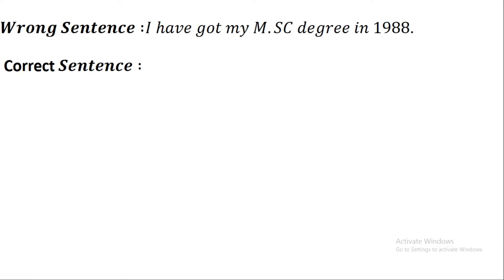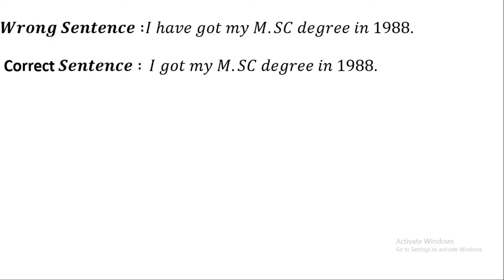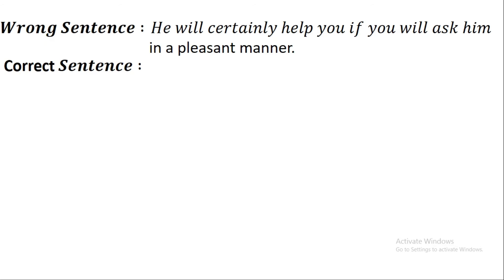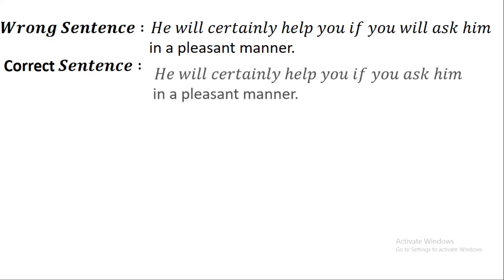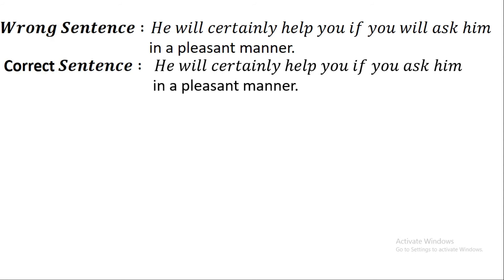Our next wrong sentence is: 'I have got my MSc degree in 1988.' It is a wrong sentence. The correct sentence is: 'I got my MSc degree in 1988.' Our next wrong sentence is: 'He will certainly help you if you will ask him in a pleasant manner.' The correct sentence is: 'He will certainly help you if you ask him in a pleasant manner.'